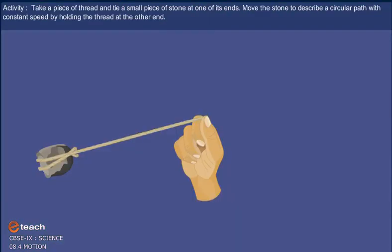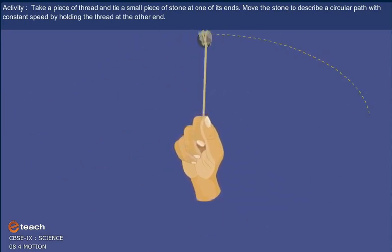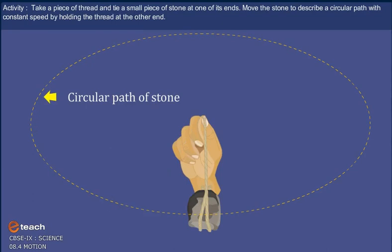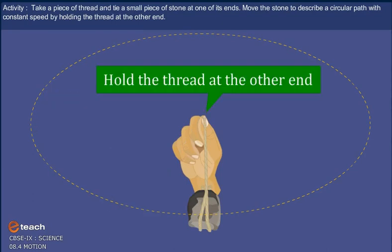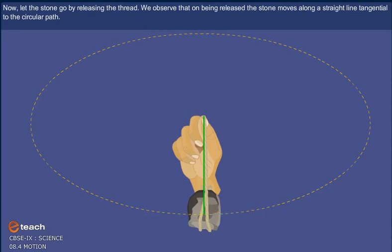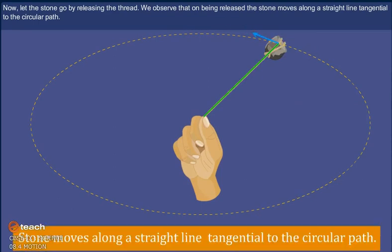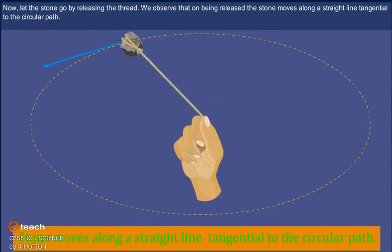Activity: Take a piece of thread and tie a small piece of stone at one of its ends. Move the stone to describe a circular path with constant speed by holding the thread at the other end. Now, let the stone go by releasing the thread. We observe that, on being released, the stone moves along a straight line tangential to the circular path.